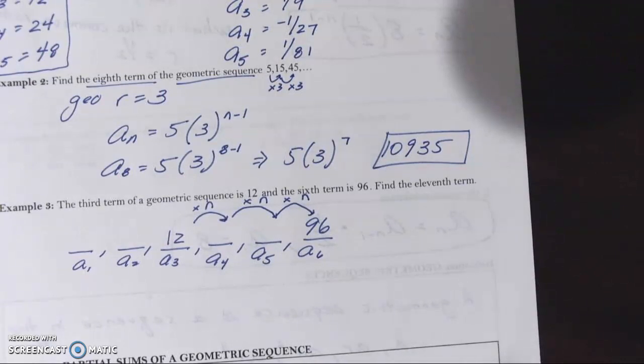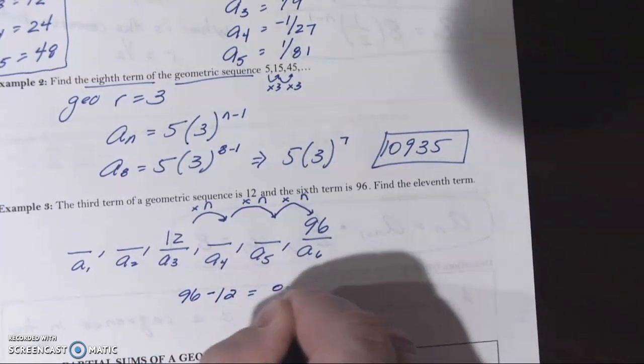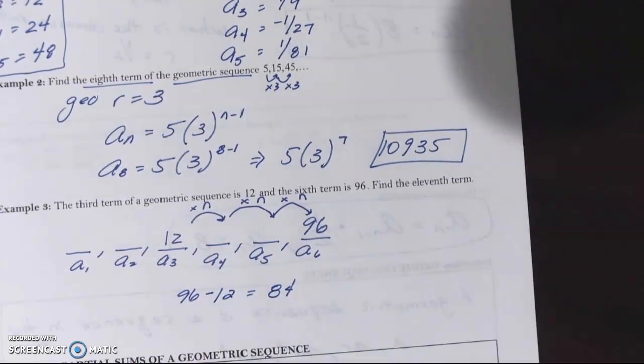So from 12 to 96, 96 minus 12 is 84. How many times am I multiplying n? I'm multiplying n three times. And I need to go get from 12 to 96 somehow. It's got to cover 84. So how do we do that? How do we figure that out?